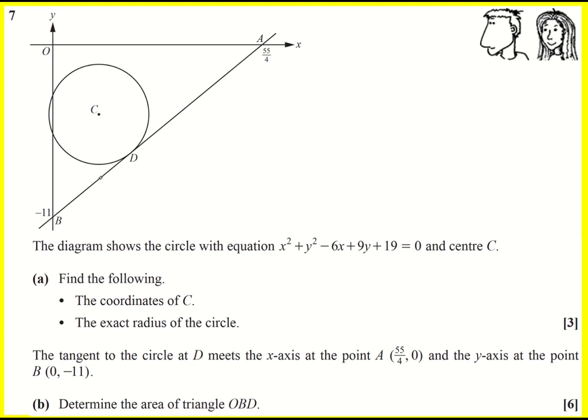Given a circle with a tangent here and some points at which the tangent goes through, we're also given the equation of the circle. We're asked to find the coordinates of C and the exact radius.